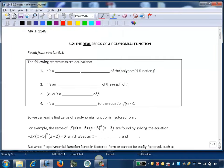Section 5.2: The Real Zeros of a Polynomial Function. Recall from the previous section that the following statements are equivalent: r is a real zero of the polynomial function f; r is an x-intercept of the graph of f; x-r is a factor of f; and r is a solution to the equation f(x) = 0.